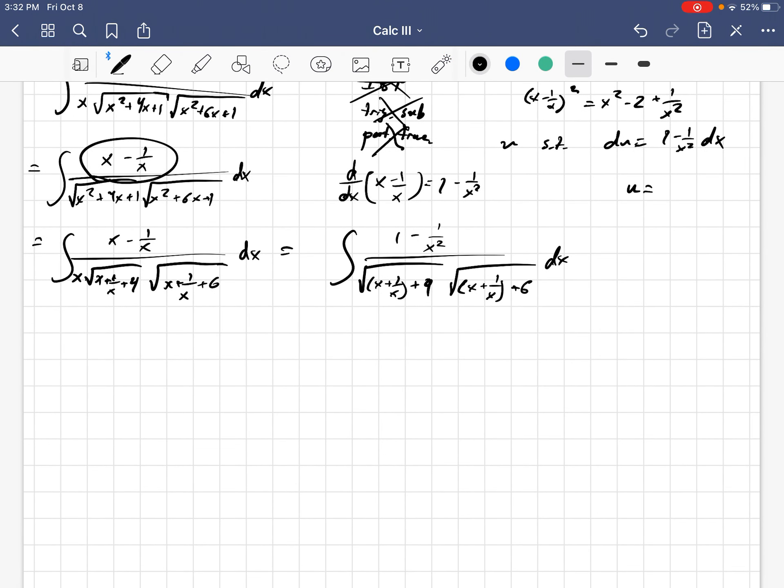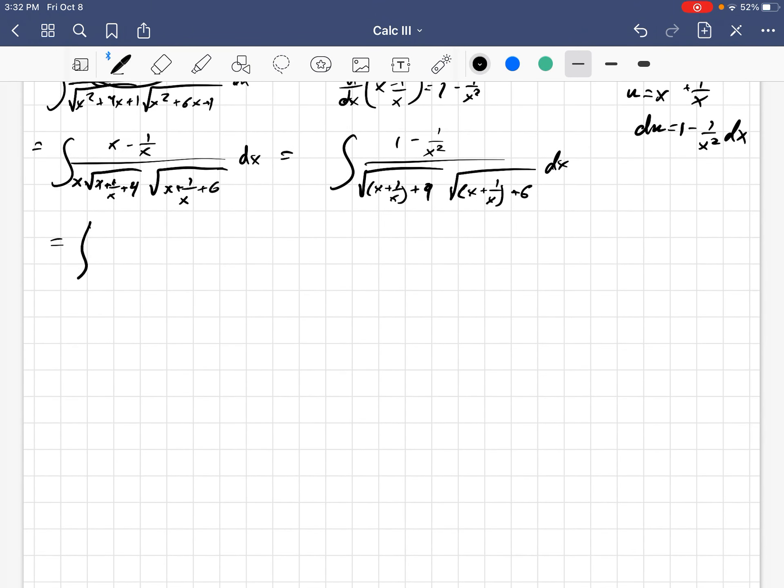So, I should let u be equal to x plus 1 over x. Then du is 1 minus 1 over x squared dx, which is exactly what we have on the top right here. We get the integral of du over square root u plus 4, u plus 6, which becomes du over square root u squared plus 10u plus 24.